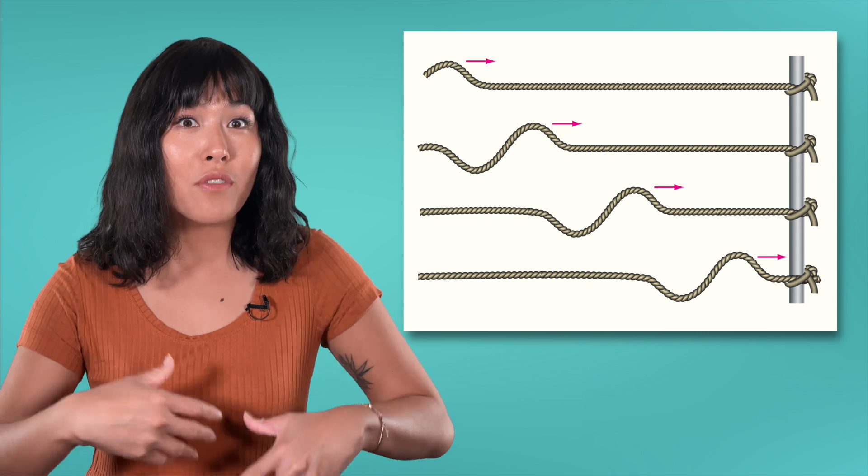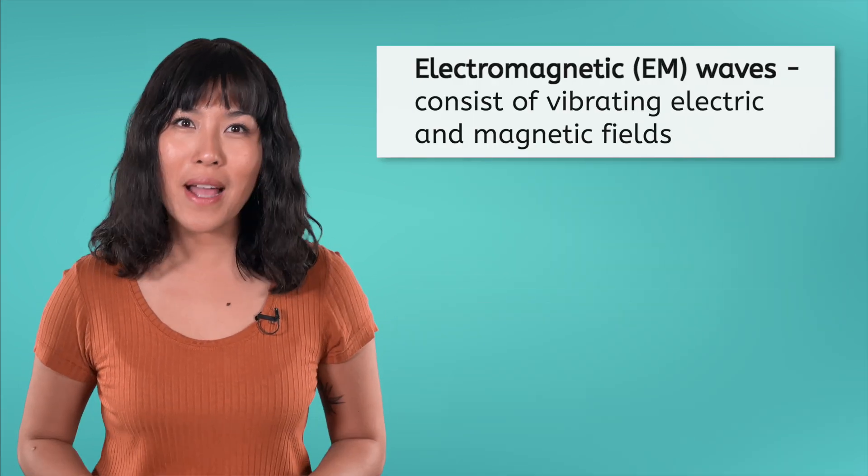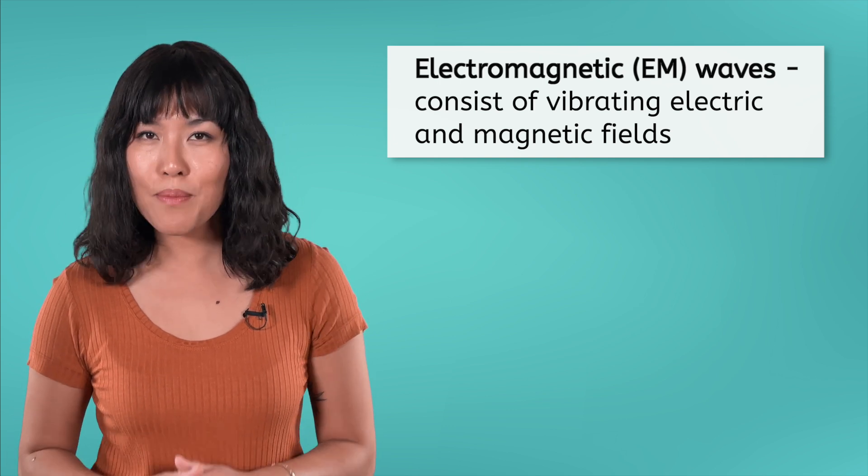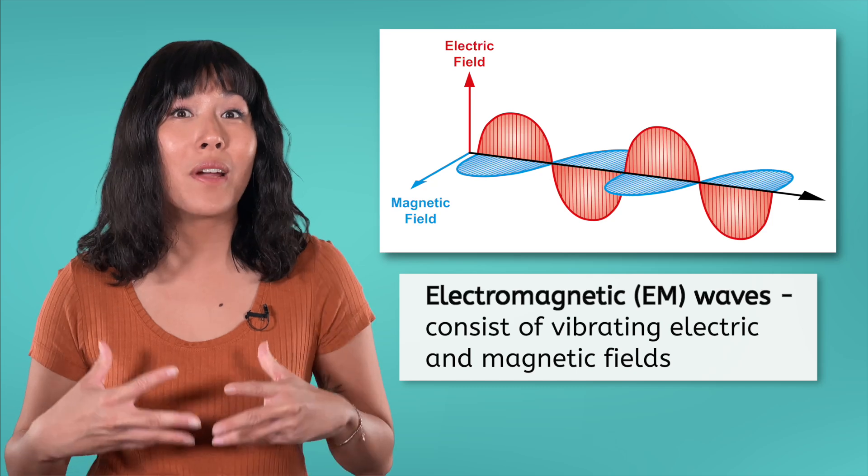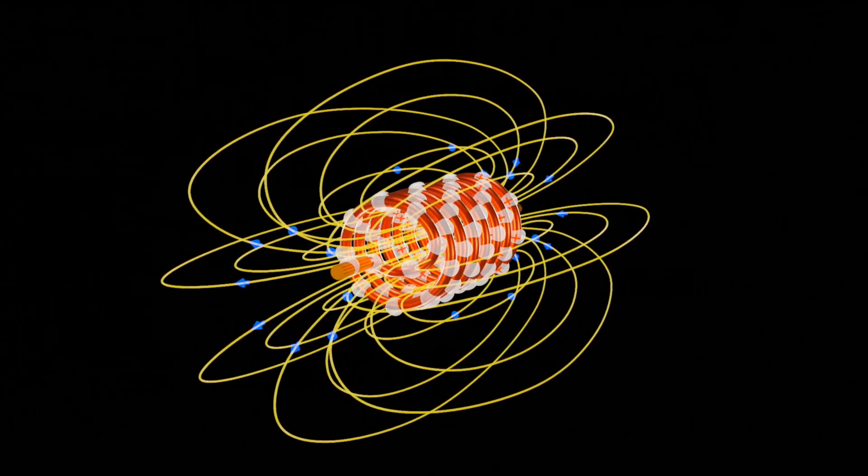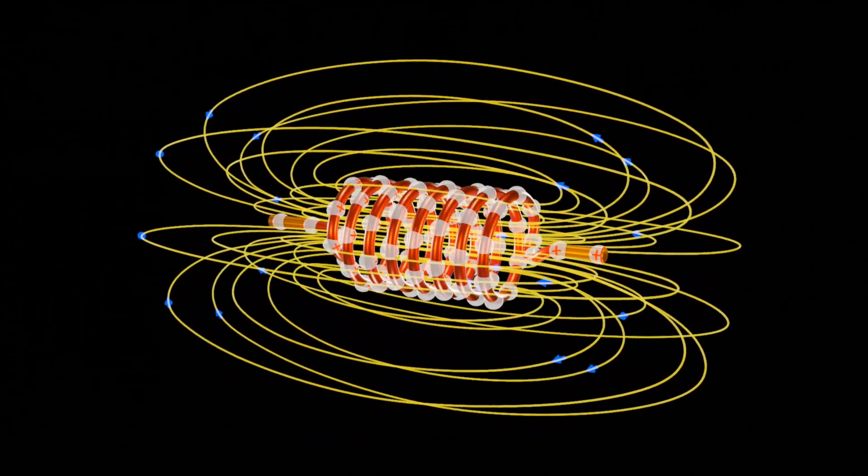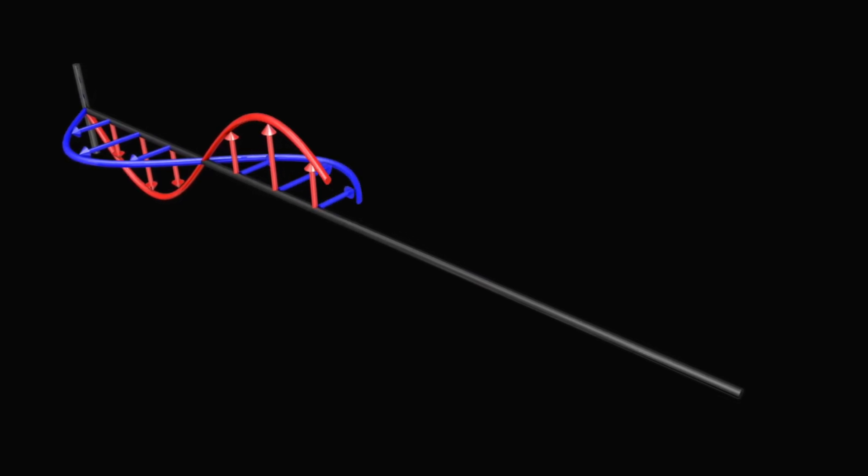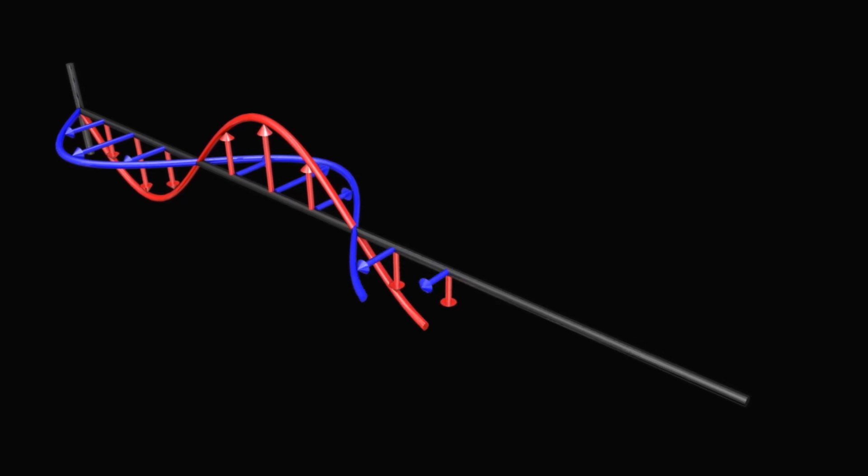Imagine you're holding a rope. When you shake it up and down, waves travel along the rope, right? Electromagnetic waves, also commonly referred to as just EM waves, are similar, but instead of a rope, they consist of vibrating electric and magnetic fields. Electric and magnetic fields are like invisible forces around electric charges and magnets. When an electric charge vibrates or accelerates, it shakes up the electric field around it. This shaking creates waves, just like your hand creates waves in the rope.